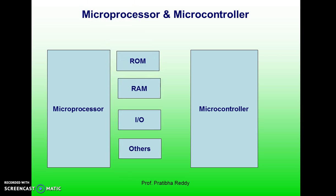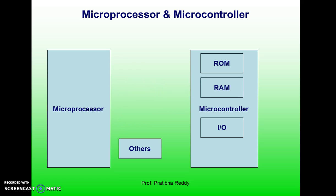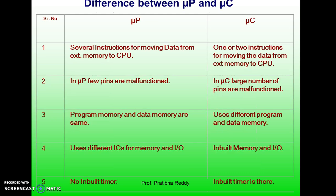Here we will analyze the differences between microprocessor and microcontroller. A simple CPU itself is a microprocessor, whereas a microcontroller contains ROM, RAM, I/O and other peripheral devices fabricated in a single IC. This is the main difference between a microprocessor and microcontroller.